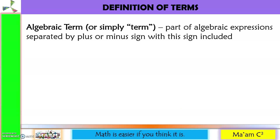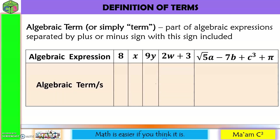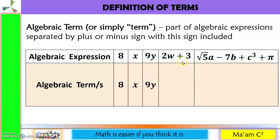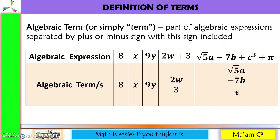Algebraic term, or simply term. It is part of an algebraic expression separated by a plus or minus sign, with the sign included. So in our algebraic expressions, we only have one term: 8. Here is x. As mentioned, 9y works as one, so we only have one term: 9y. In here we have two terms: 2w and positive 3. Here we have square root of 5a and negative 7b. Here we have positive c cubed, and the constant pi.